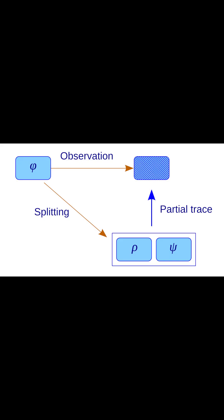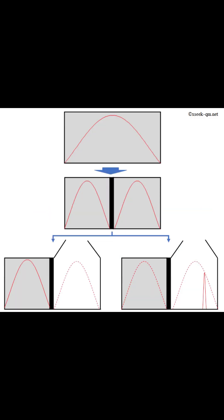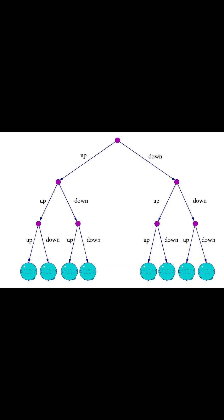Both outcomes are real, just no longer connected. And it's not just the cat. Every quantum event splits reality endlessly. You make a choice, and the universe makes copies. Every you exists in a separate branch, unaware of the others.